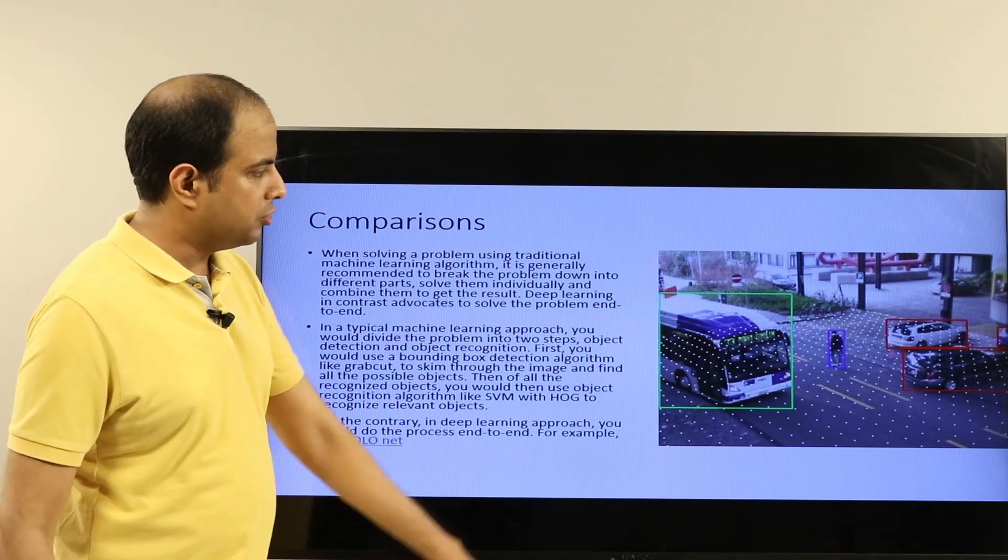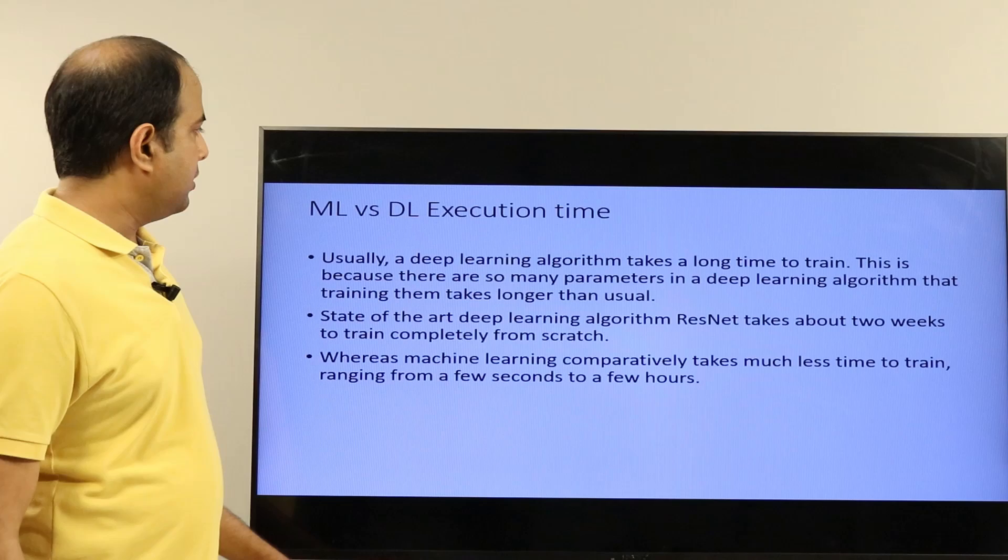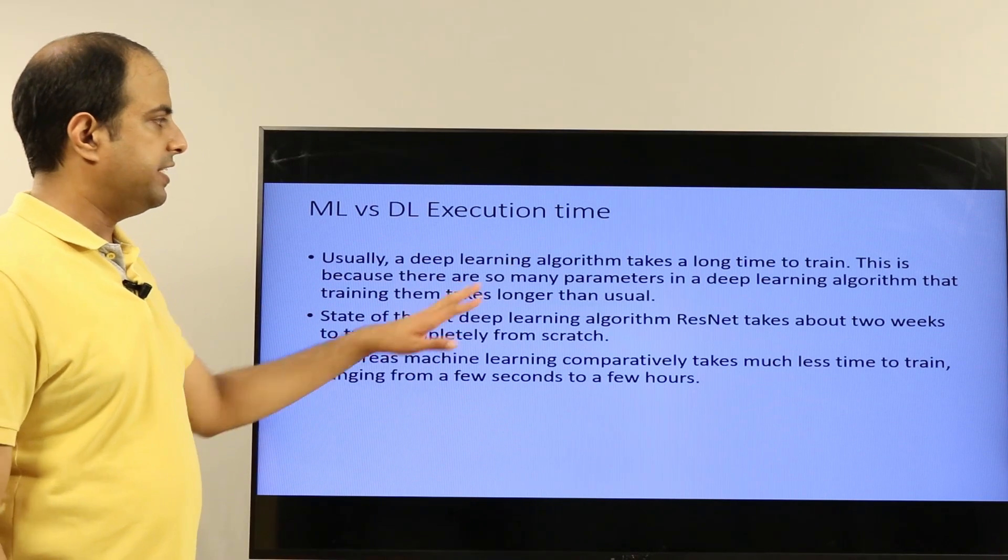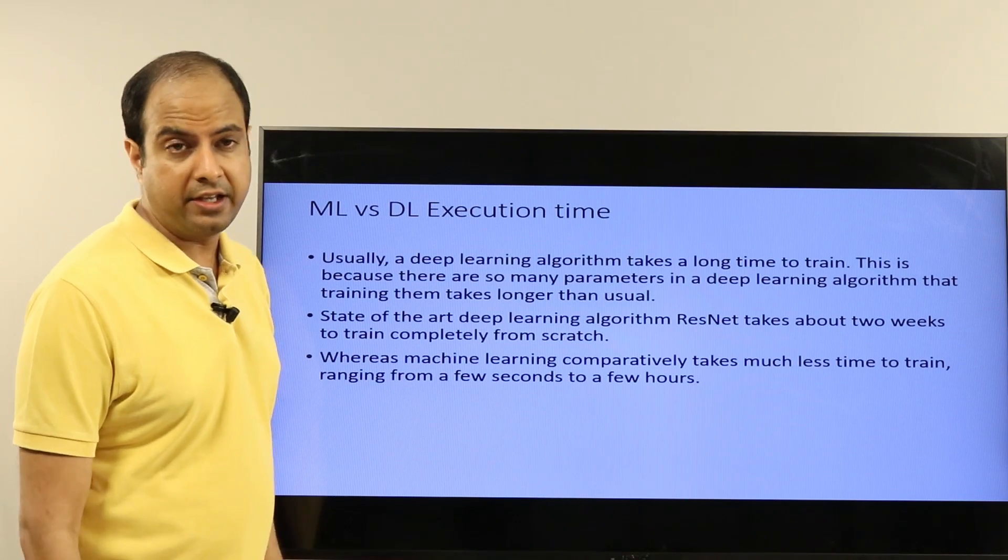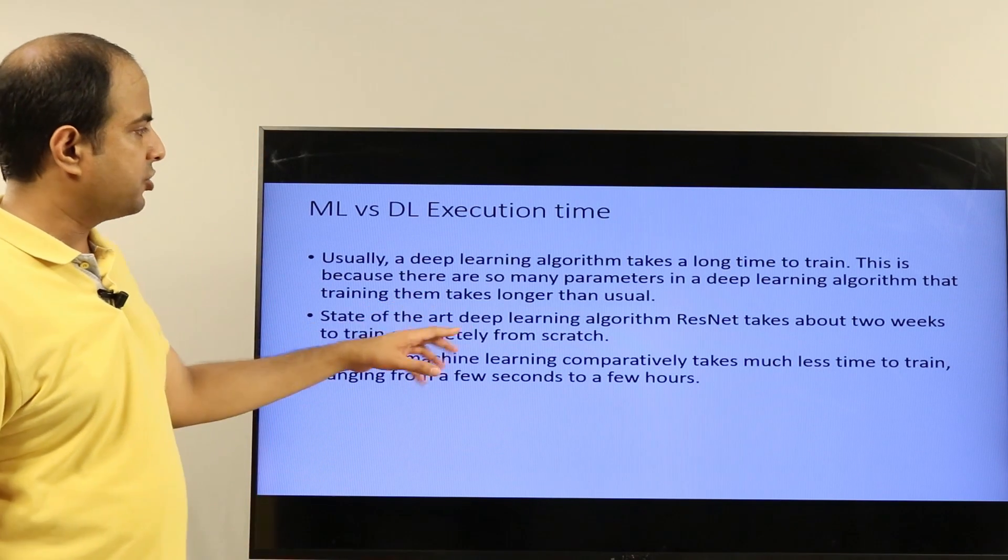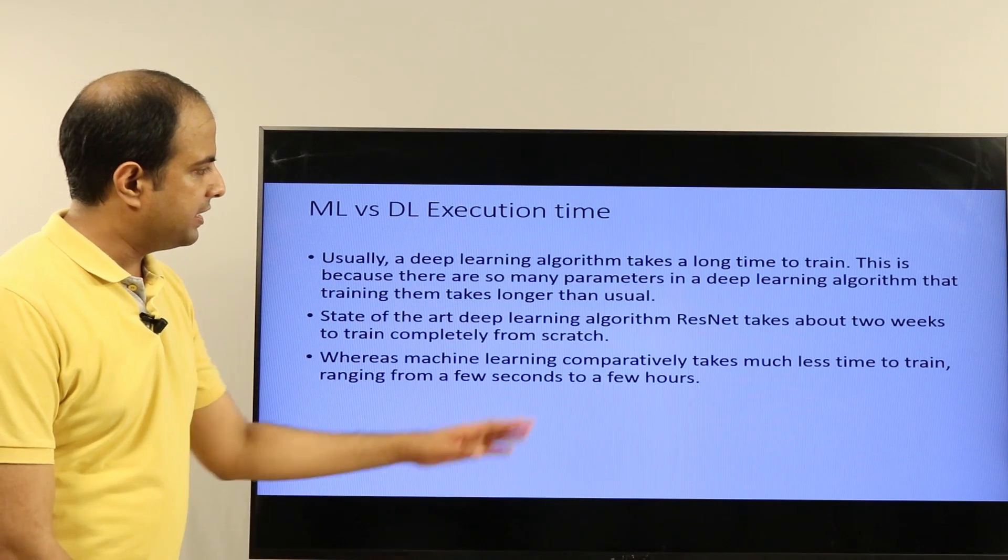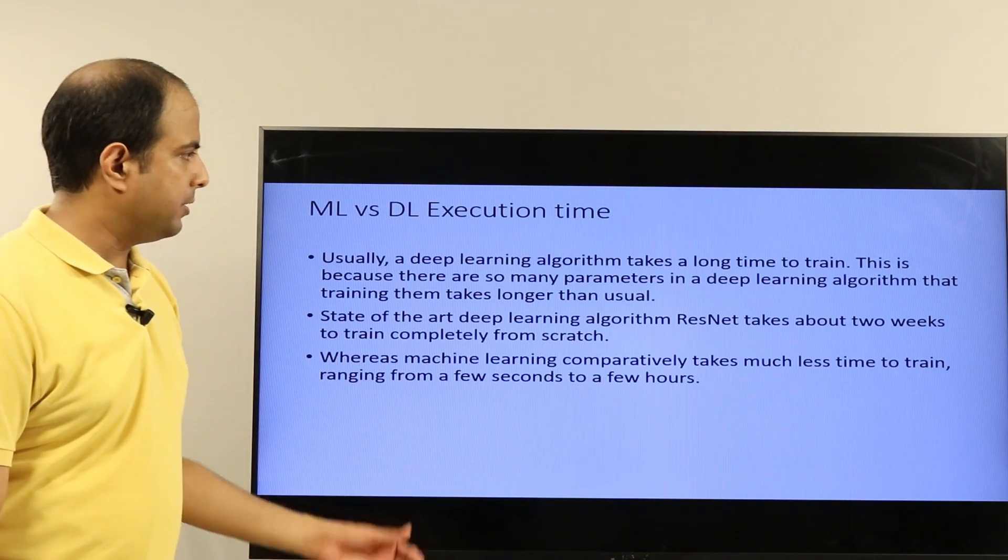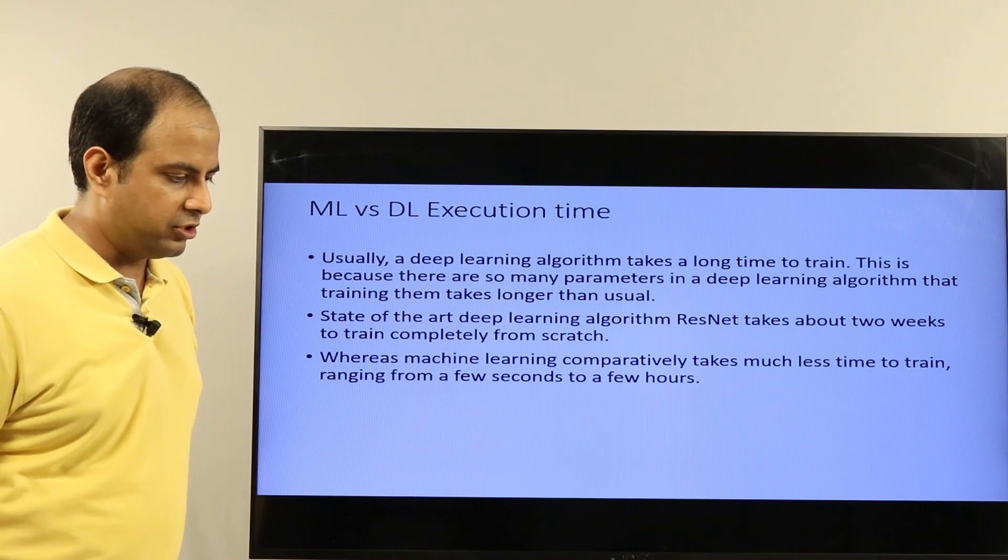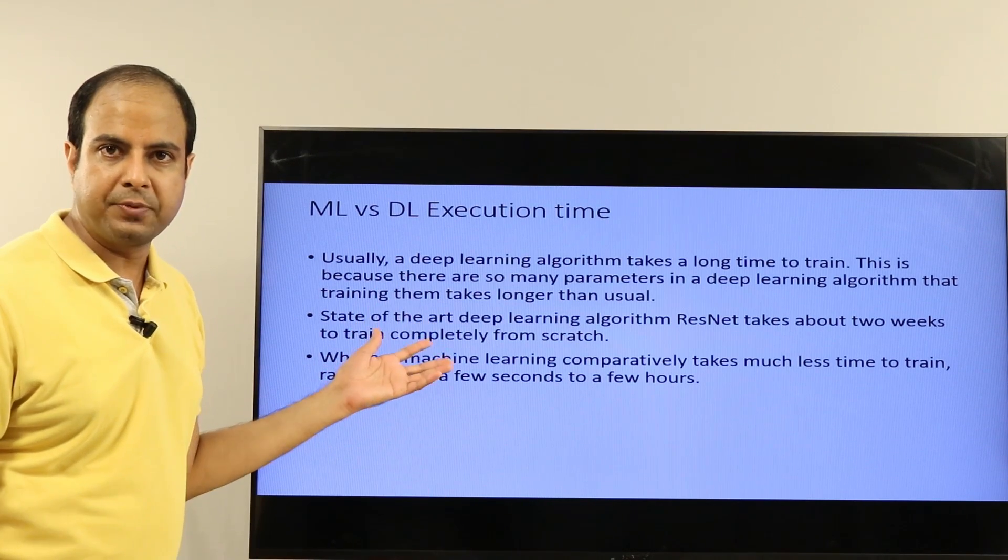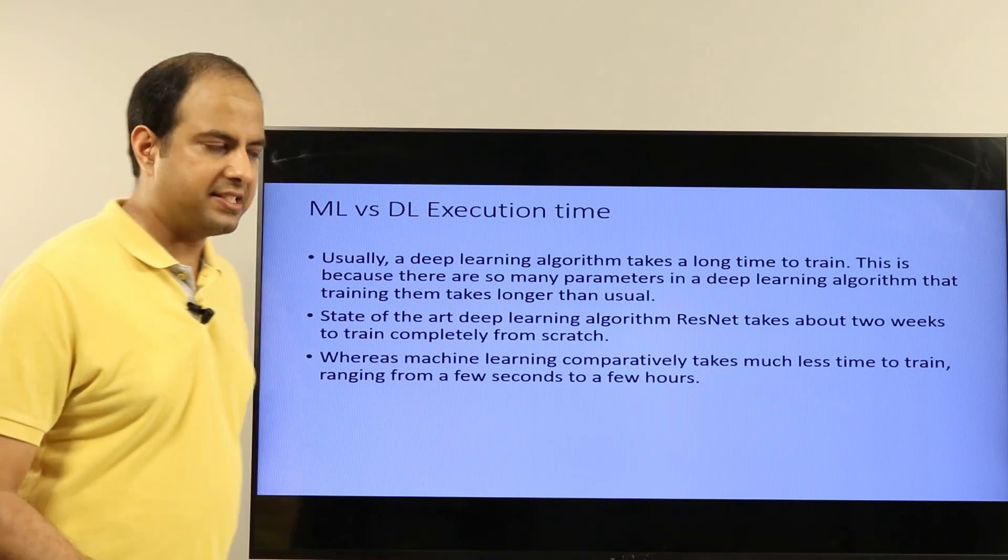Execution time-wise: usually a deep learning algorithm takes a long time to train—not just high compute power but also a long time to train on a high compute machine. This is because there are so many parameters in a deep learning algorithm that training them takes longer than usual. State-of-the-art deep learning algorithm ResNet, for example, takes about two weeks to train completely from scratch on a reasonably sized dataset for image classification tasks.